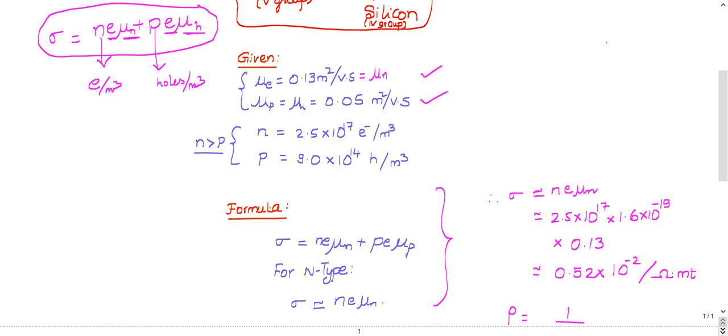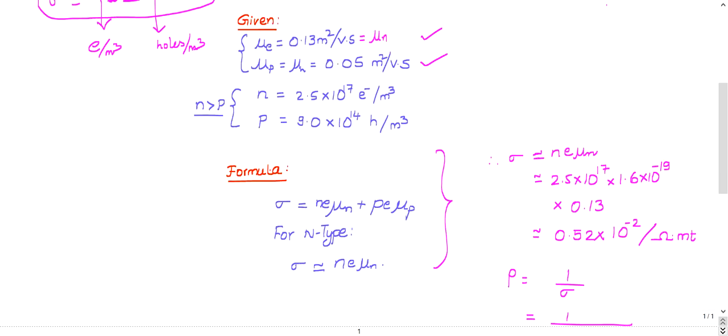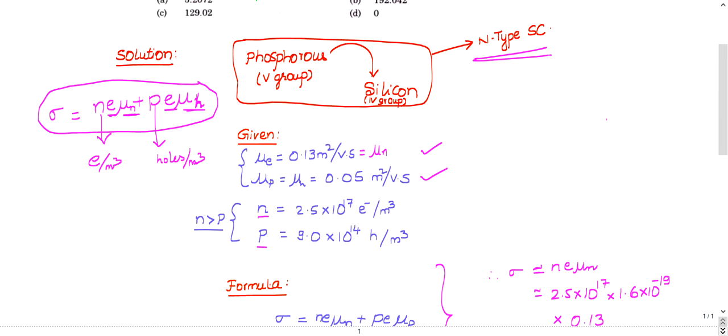μₙ indicates mobility of electrons and μₕ indicates mobility of holes. I've written the given information: mobility of electrons, mobility of holes, electron density, and hole density.